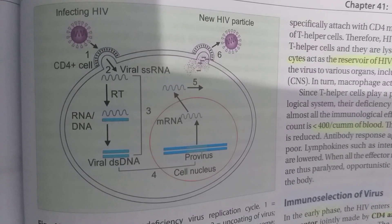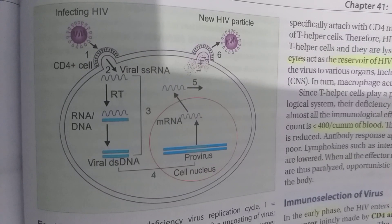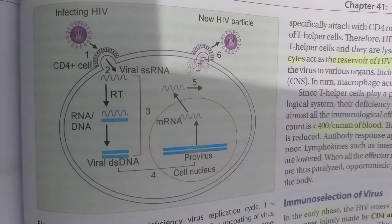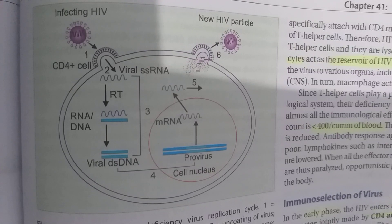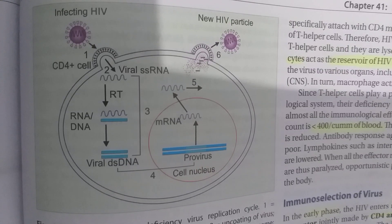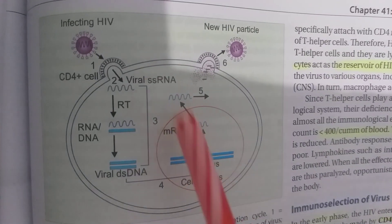Once the virus enters by binding to the CD4 receptors of the target cell, the viral RNA is converted to a DNA strand known as the minus strand. The original RNA strand is then hydrolyzed by the RNase H protein, and this minus strand is used as a template to produce another DNA strand.